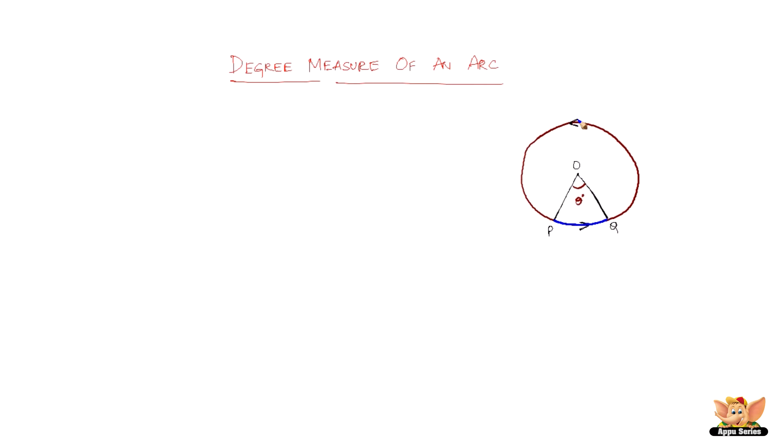Now the reason for this arrow mark here is that we need to go in one direction, either anti-clockwise or clockwise. So now going anti-clockwise, we know the minor arc is PQ, and the major arc would be the green one here, that is QP.